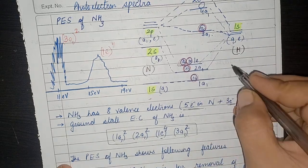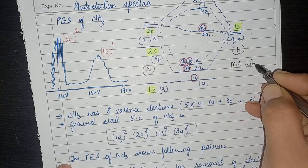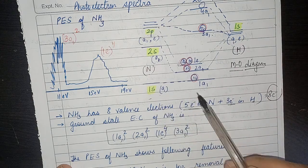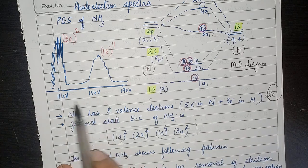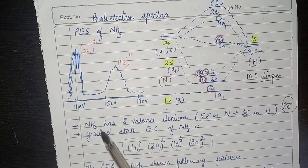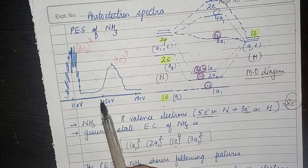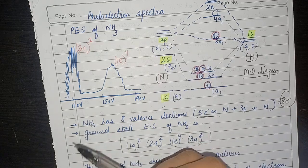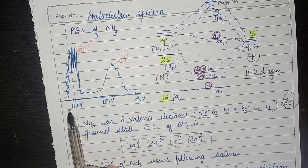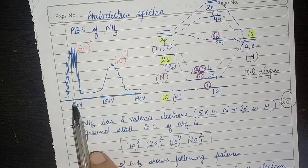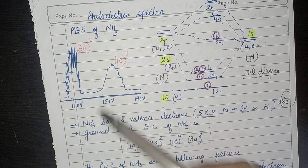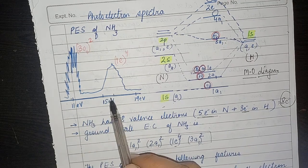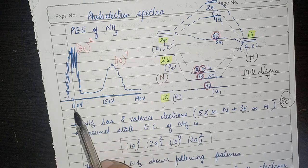Now, beside the molecular orbital diagram, we take the photoelectron spectra of ammonia. When we obtain this spectra, we get mainly two peaks. The first peak is around 10.88 eV and the second peak is at 16.0 eV.